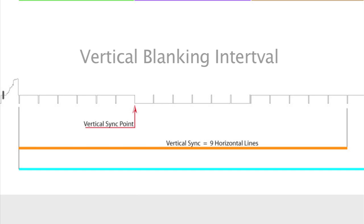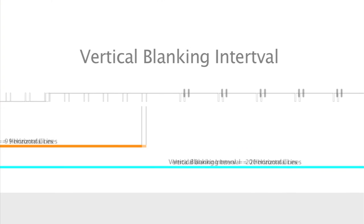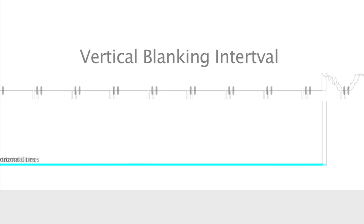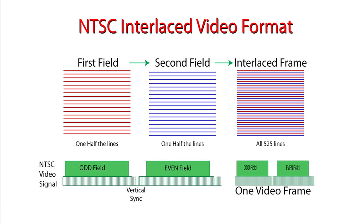Vertical sync takes place during the vertical interval or vertical blanking interval during which no picture information is transmitted. Because each field carries only half the lines, or 262 and one half lines.